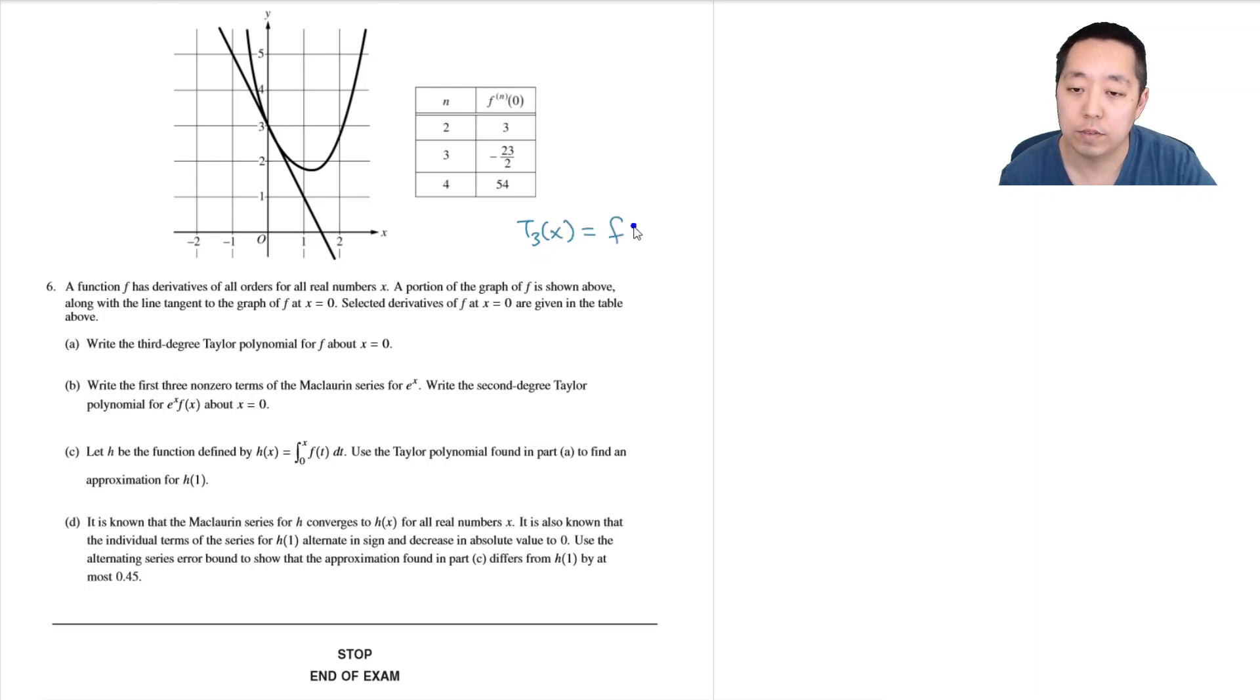The third degree Taylor polynomial is going to be f(0) plus f'(0)x plus one half f''(0)x squared plus one-sixth times the third derivative times x cubed. I have to know what each of these are.